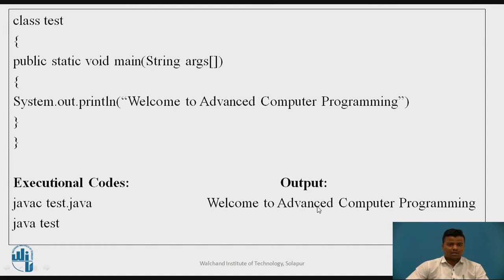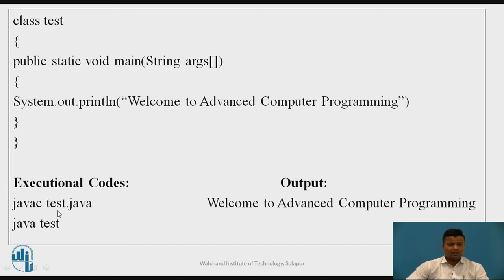This is the output. To execute the program, first there is compilation and then interpretation. For compilation: javac space test.java — we have saved the file as test.java, so we use javac followed by the file name. This creates the class file. Then for output: java space test (the class name) — with this we can achieve the output.